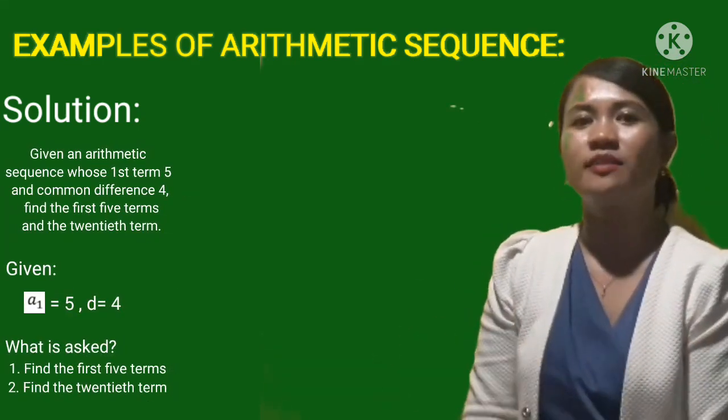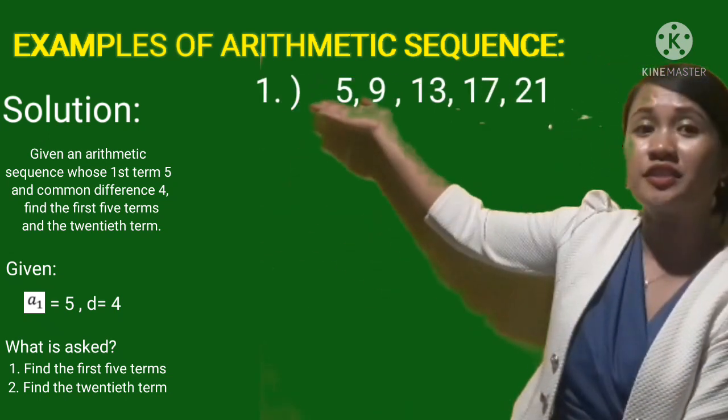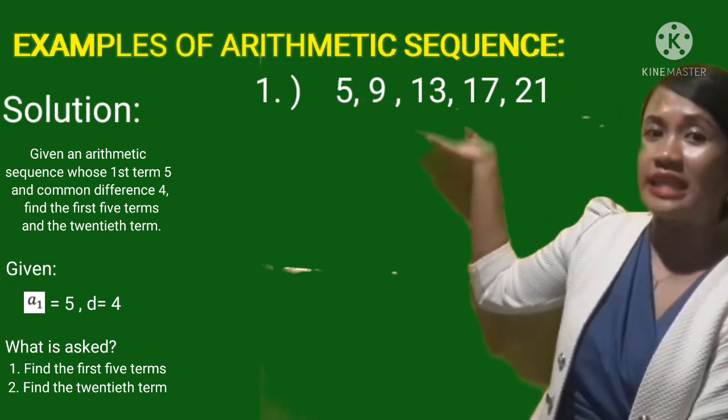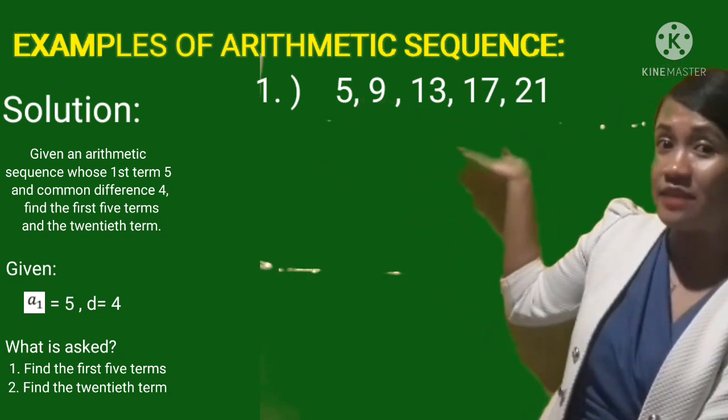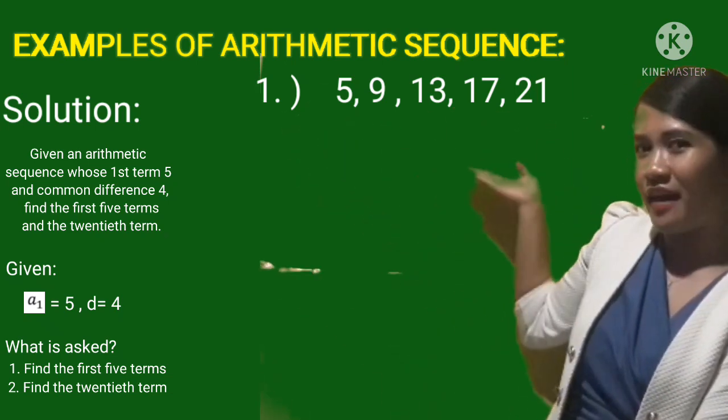Find the first 5 terms. So since we have already the A sub 1, just simply add the common difference which is 4. So we have 5, the first term, plus 4, that is 9, plus 4, that is 13, plus 4, that is 17, plus 4, that is 21. So here are the 5 first terms.